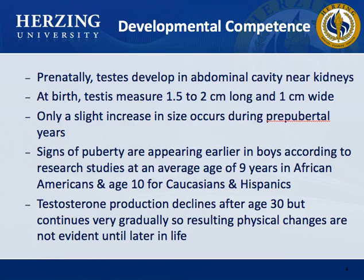The male genitalia undergo developmental changes, with the most striking changes occurring during adolescence. The first sign of puberty is enlargement of the testes, followed by pubic hair development and an increase in penis size. Tanner sexual maturity ratings document the stages of development.